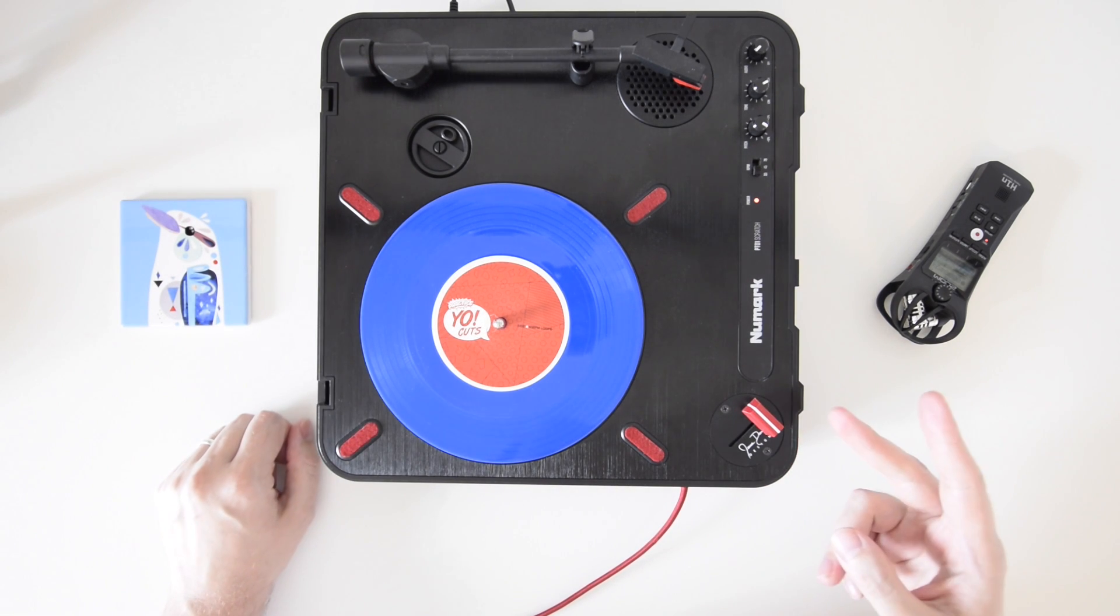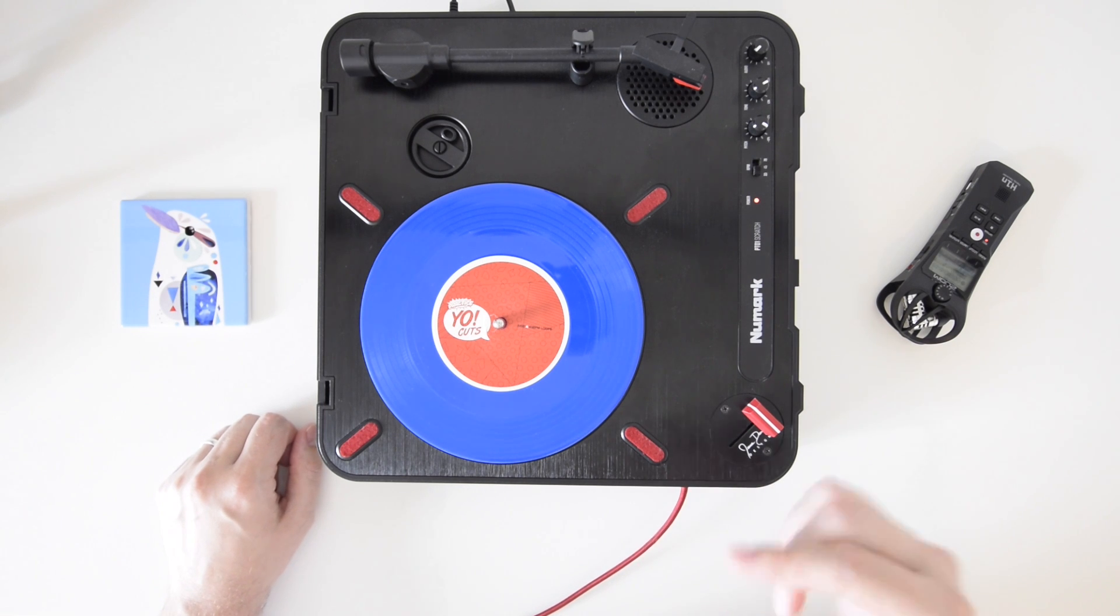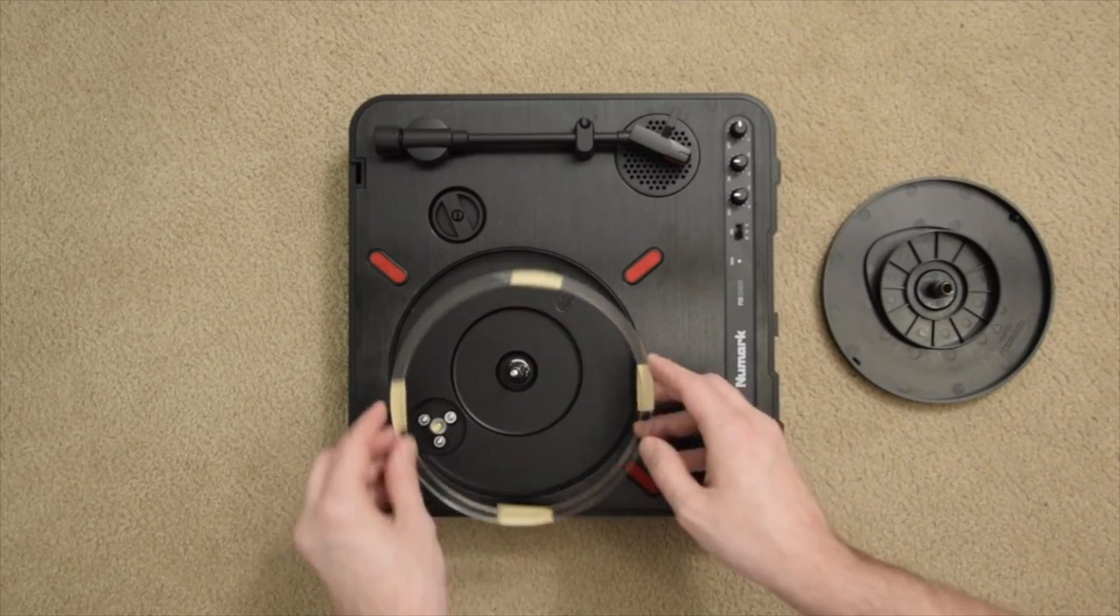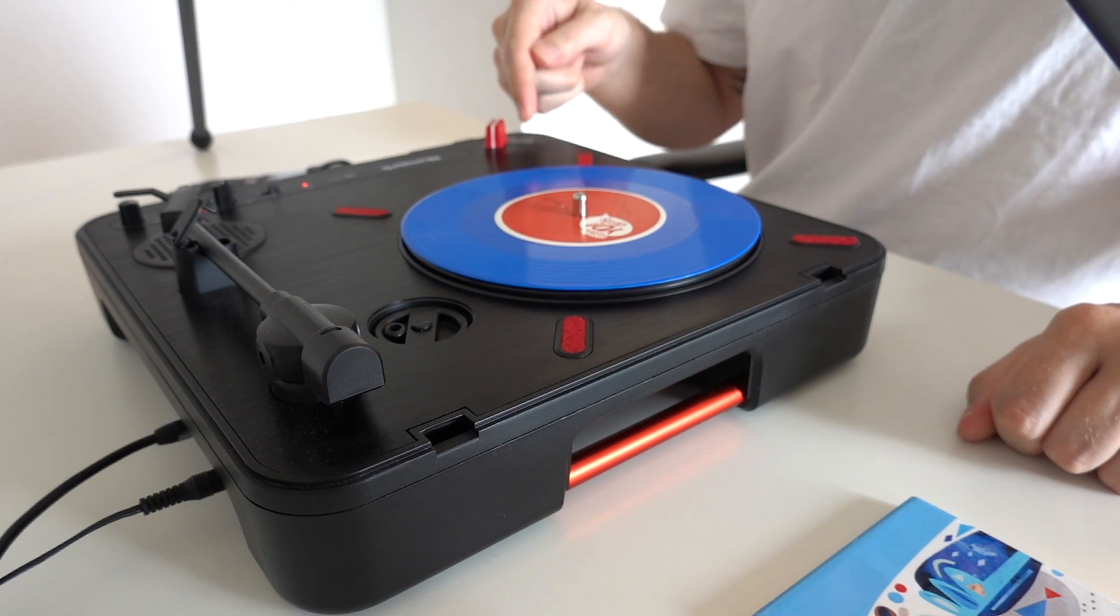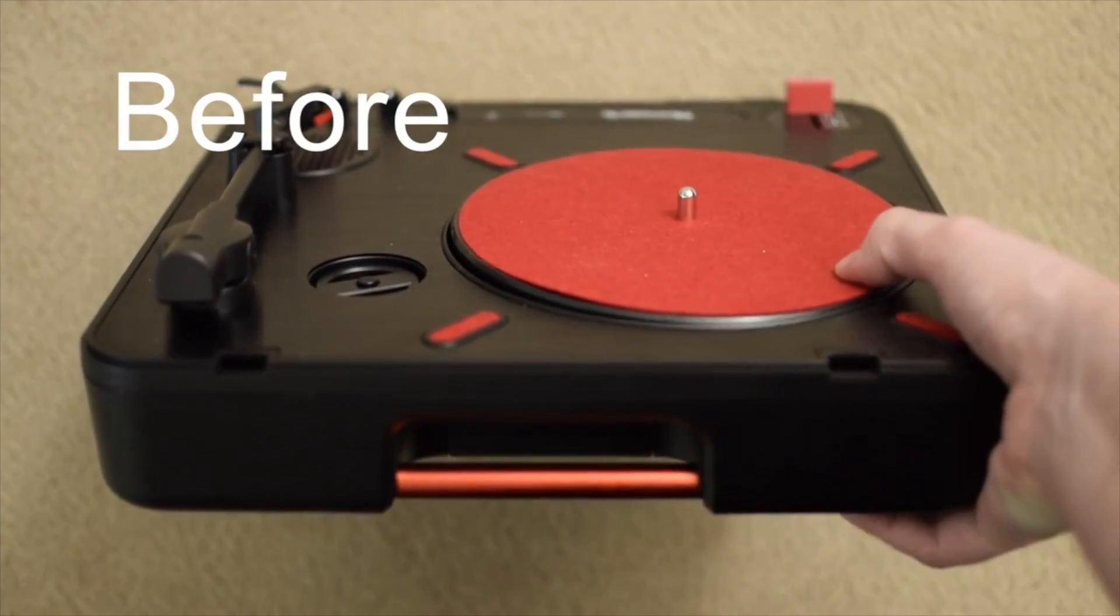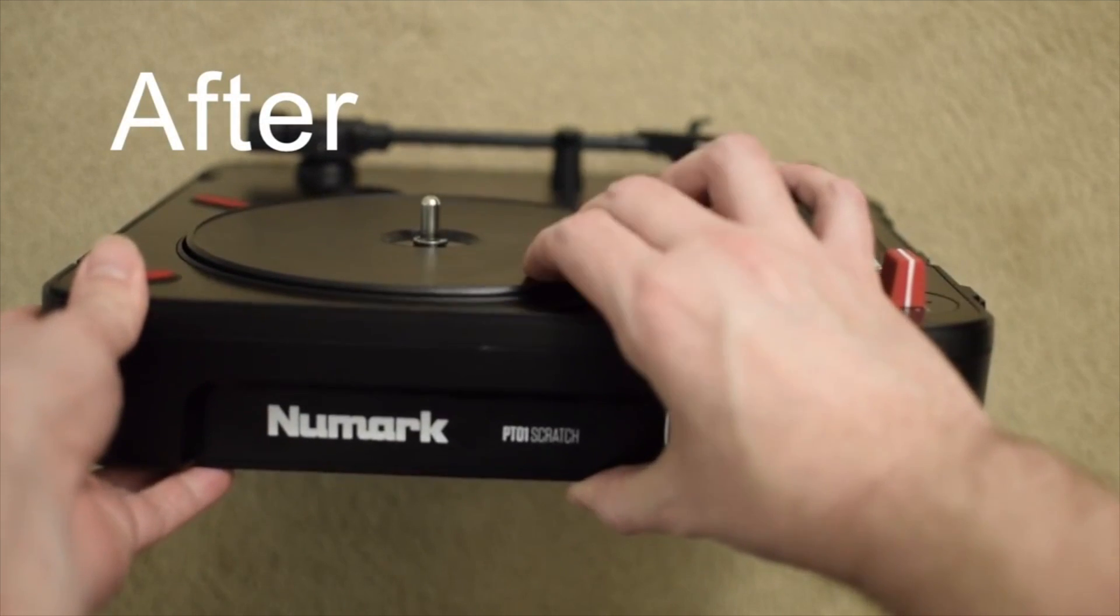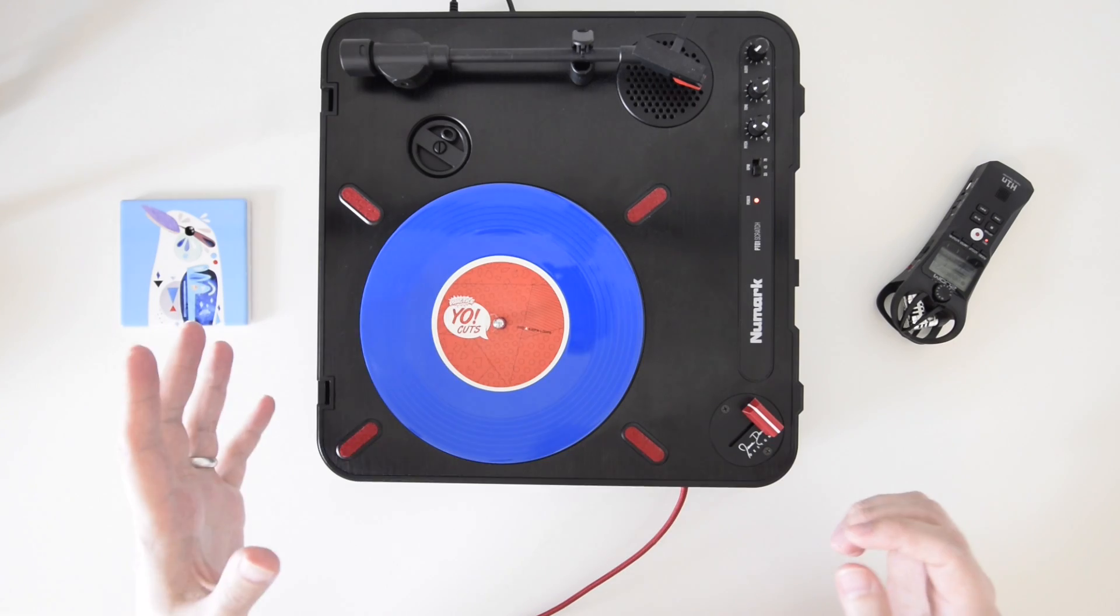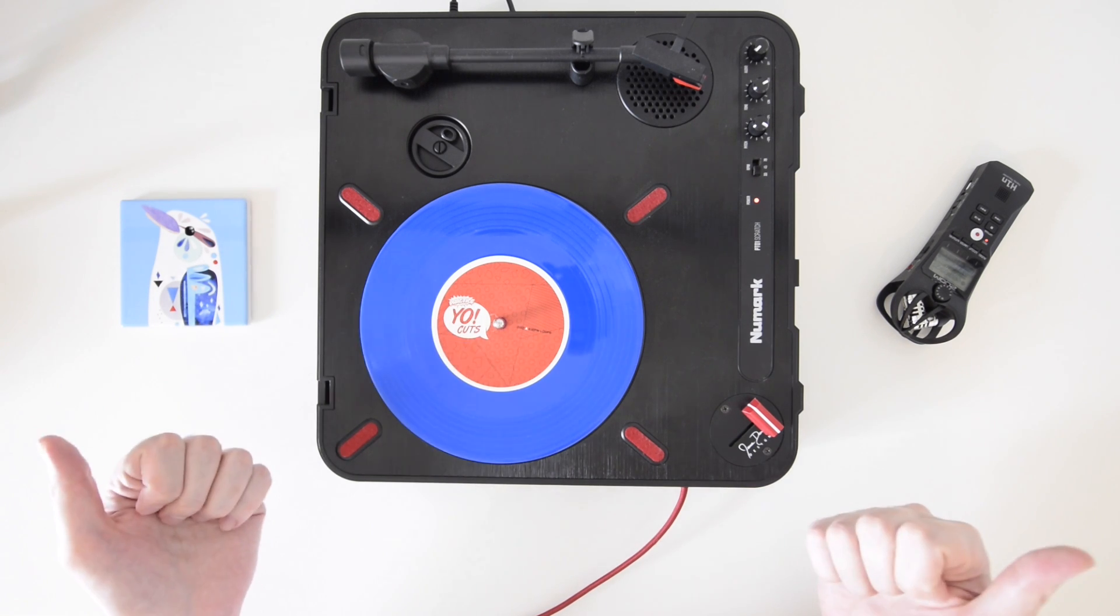Now the second mod that I've done on this guy was install a Bihari platter stabilizer. All this is essentially is just a ring of plastic that sits underneath the platter and as you imagine it helps stabilize the platter. For me I've got pretty heavy hands when it comes to scratching so anything that can help stop the needle from jumping gets a thumbs up from me.